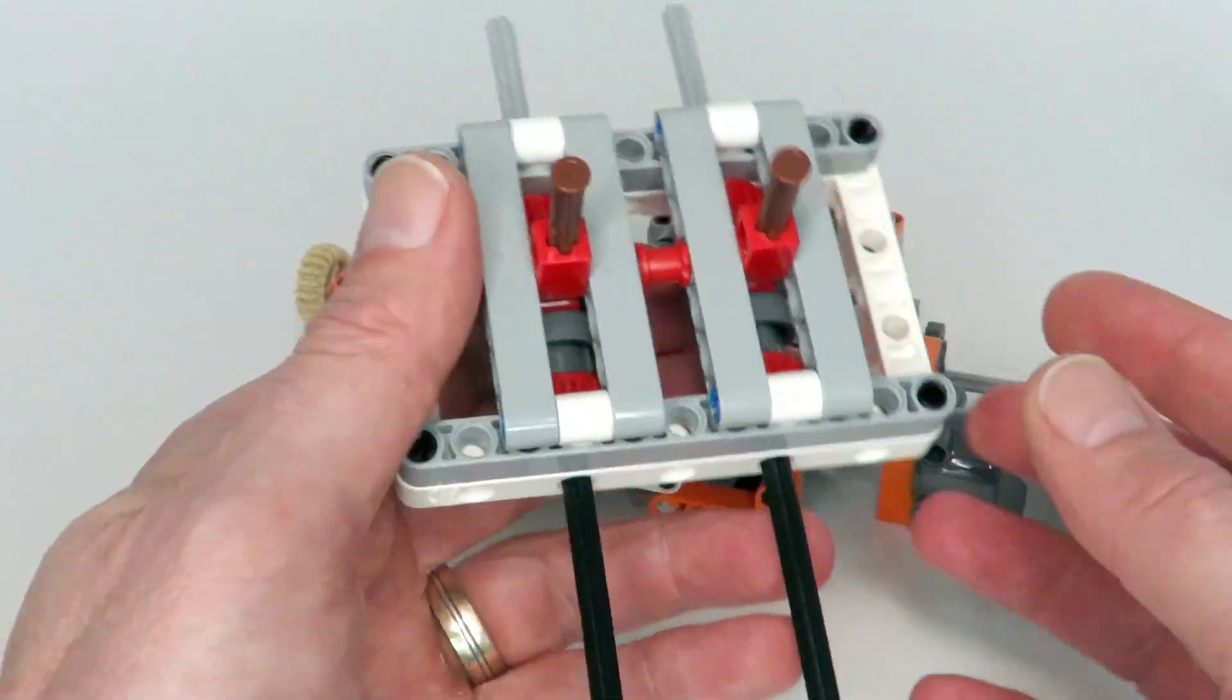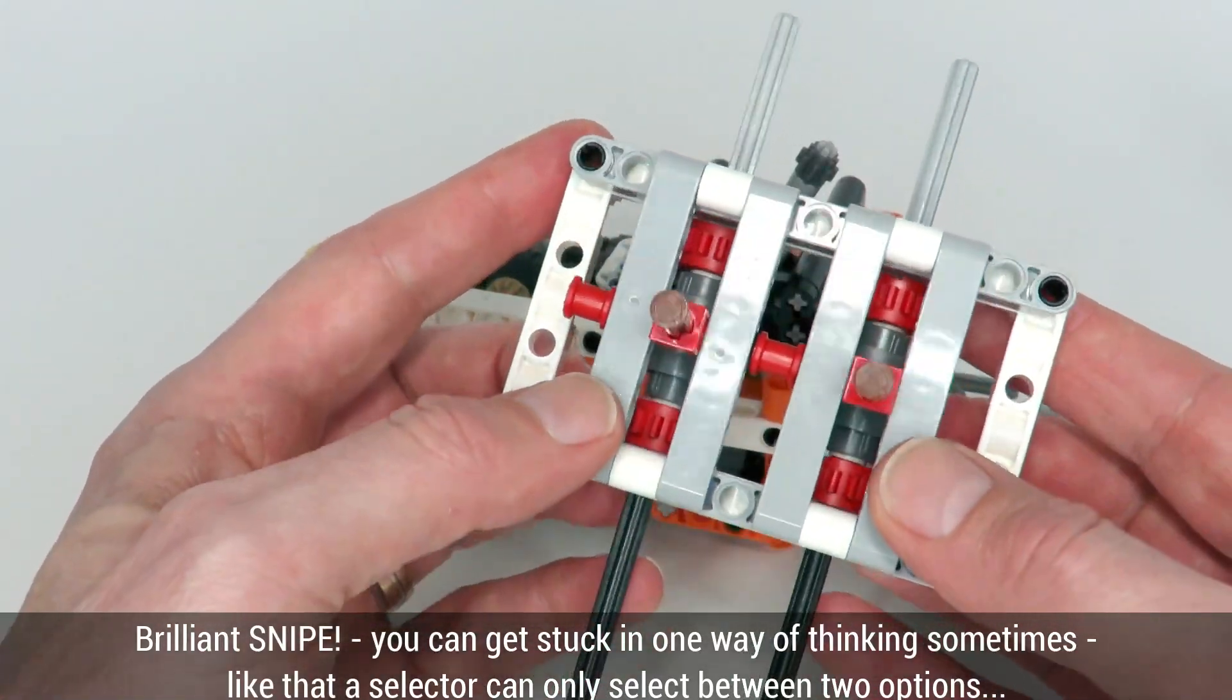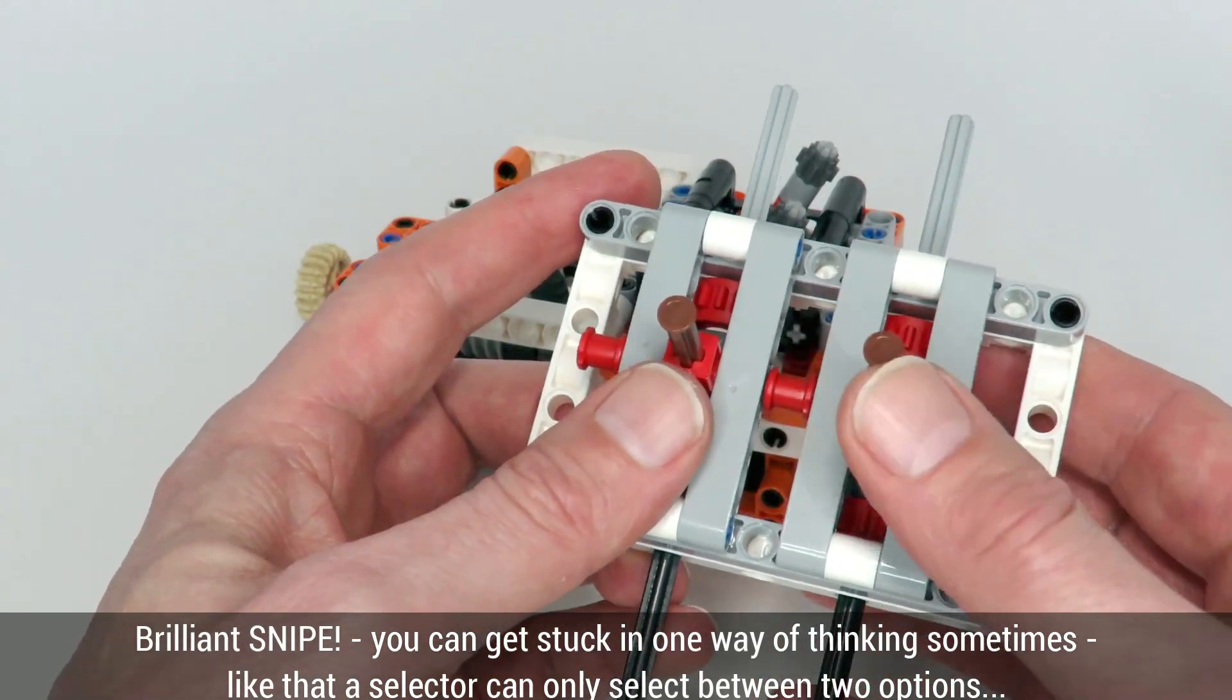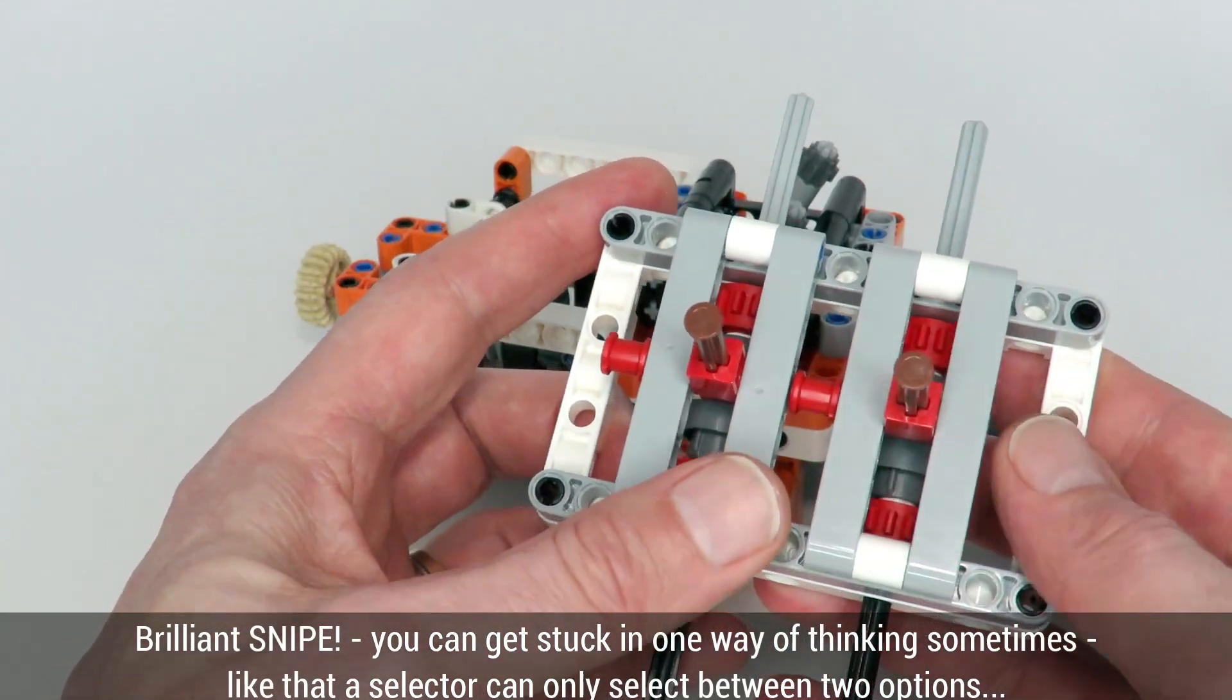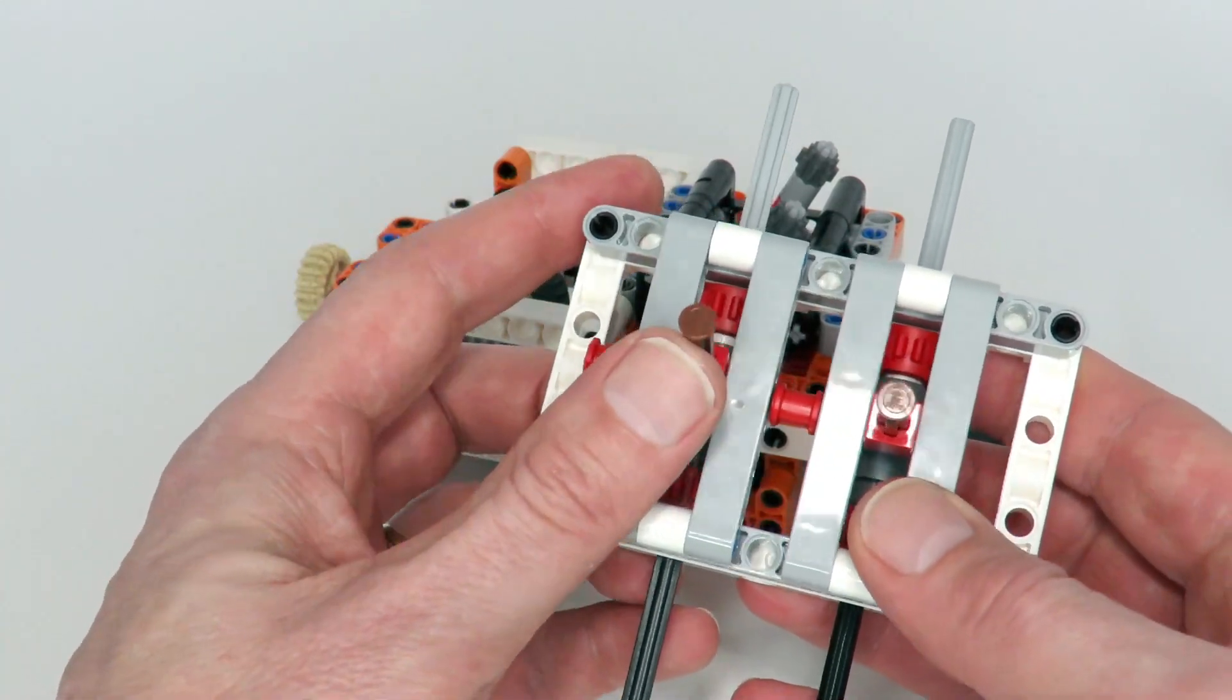Two on each side, so two times two is four. But what was brilliant about Snipe's idea was that he realized that in fact with two levers, because they've got a central position as well, you can in fact make eight or nine different combinations—in fact nine combinations. So you can have that one up.